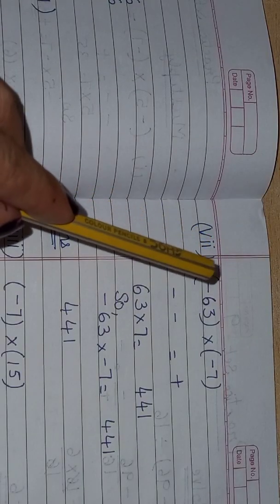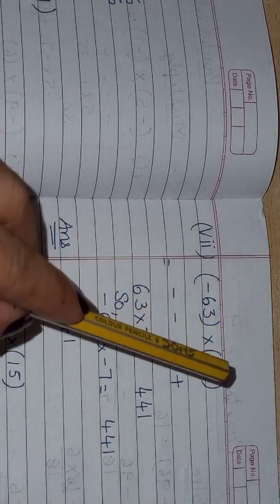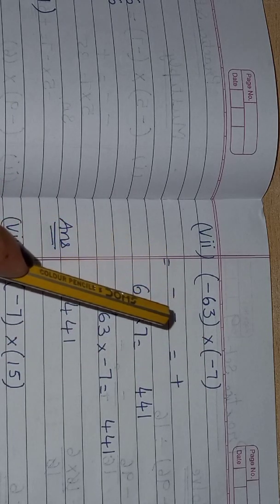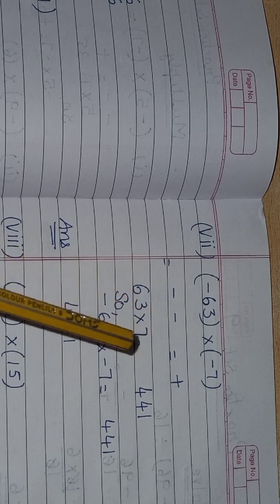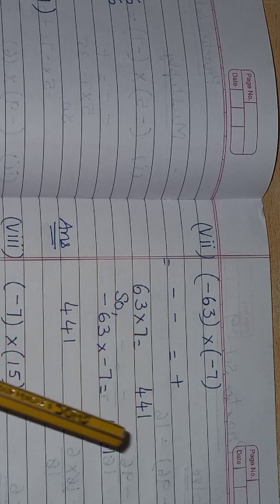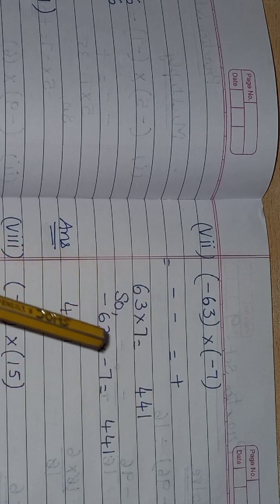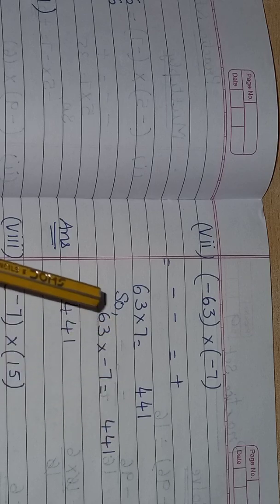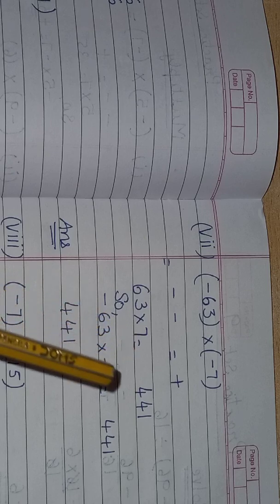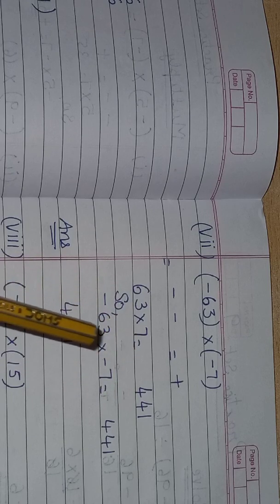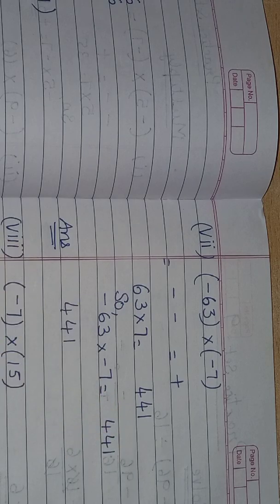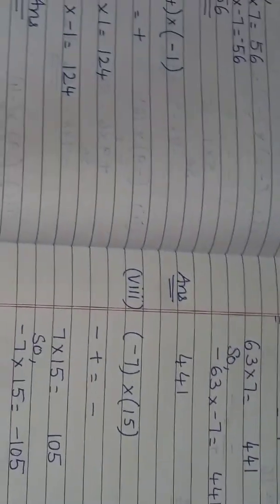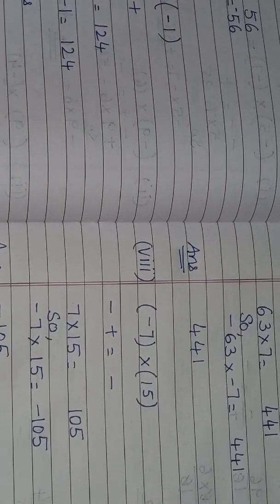This is your seventh question: minus 63 multiply minus 7. Minus multiply minus is equal to plus. 63 multiply 7 is equal to 441. So minus 63 multiply minus 7 is equal to 441. That is the answer.